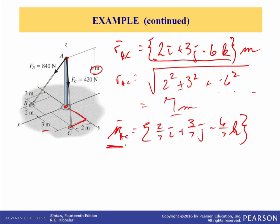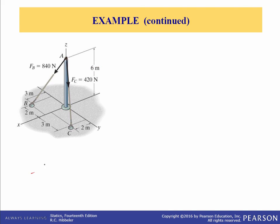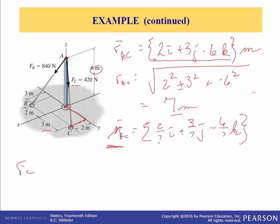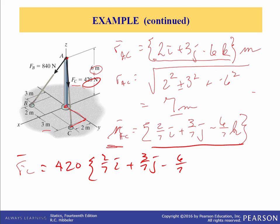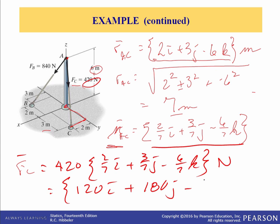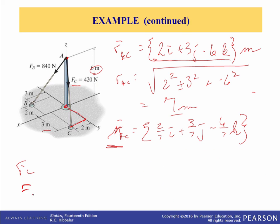Now it's just a simple matter. We want F_C in Cartesian form: multiply the unit vector we just calculated by the magnitude of F_C, which is 420. So F_C vector equals 420 times (2/7 i plus 3/7 j minus 6/7 k). Doing the multiplication — this is in Newtons — we get 120 i plus 180 j minus 360 k Newtons. So there's F_C as a vector.